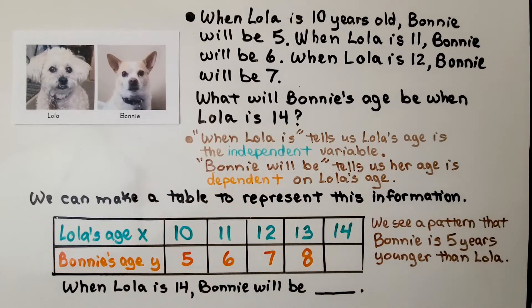We can make a table to represent this information. Lola's age at 10, Bonnie will be 5. When Lola's 11, Bonnie will be 6. When Lola's 12, Bonnie will be 7. We need to find Bonnie's age when Lola is 14. I put when Lola's 13, Bonnie will be 8. We need to find this one.